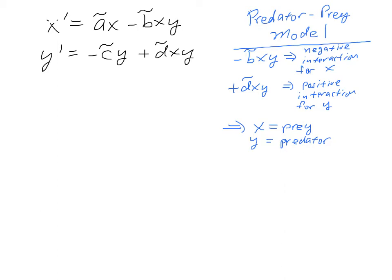The predator-prey model, if you just focus on X' equals the parameter A tilde times X, that would be exponential growth. But then you have a negative interaction term, so this means that X has a negative interaction with Y as far as its change goes.